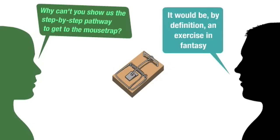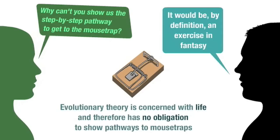It so happens that inventive solutions have been put forward for reducing the standard trap to one part, but whether or not they're valid neither strengthens nor weakens evolutionary theory which concerns life, not non-living manufactured objects, and therefore has no obligation to show pathways to mousetraps.